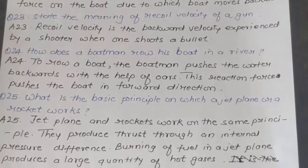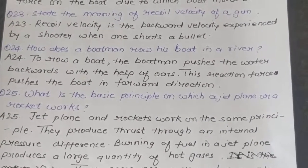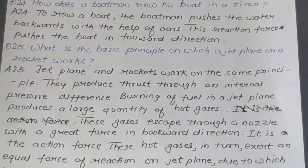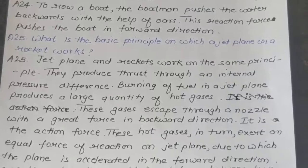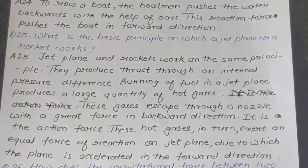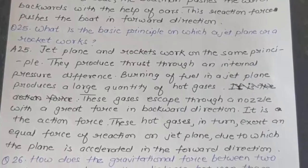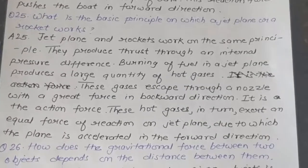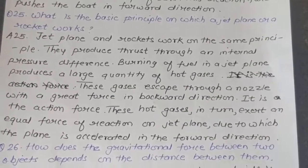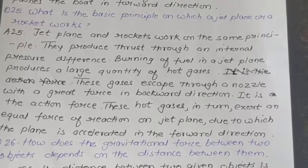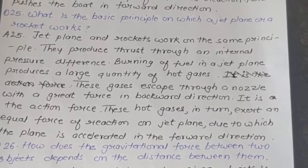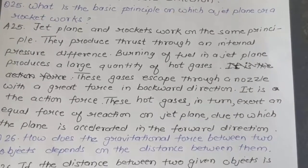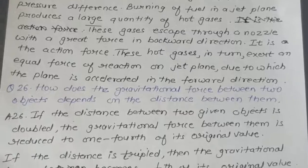Question 25: What is the basic principle on which a jet plane or a rocket works? Answer: A jet plane and rocket work on the same principle — they produce thrust through internal pressure difference. Burning fuel in a jet plane produces large quantities of hot gases that escape through a nozzle with great force in the backward direction (action force). These gases exert an equal reaction force on the jet plane, accelerating it forward.